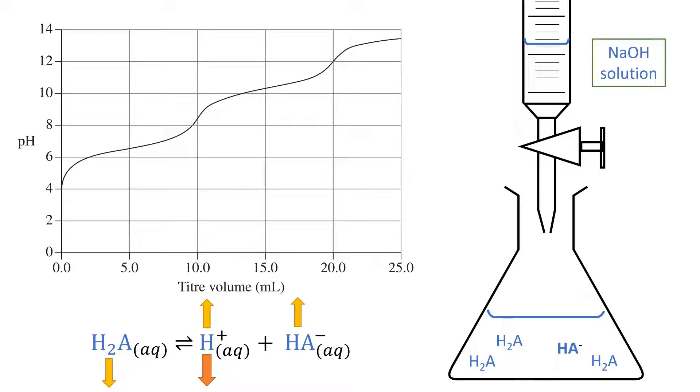Therefore, we will have less and less H2A and more H+ and HA- ions. However, as we add more and more sodium hydroxide, the pH, which started low, will increase as hydrogen ion concentration will continue to reduce, making the solution more basic and increasing the pH.